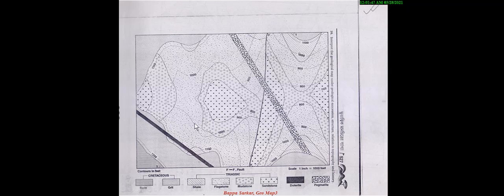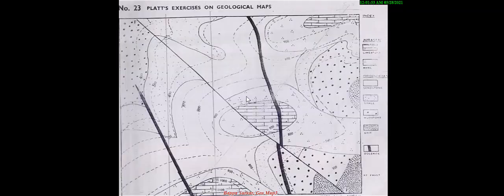Another igneous body is the black-shaded dolerite which cuts across this bed and this bedding line, so this is also known as a dyke because it cuts across all the beds. In this map we found two types: one is dolerite, another is pegmatite. In the next map there are also two types shown here, here, and here. From the index we know this is dolerite which cuts across this bed, this bed, this bed — so it is a dike, and another dike is also here.